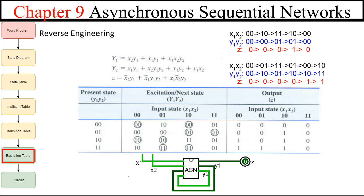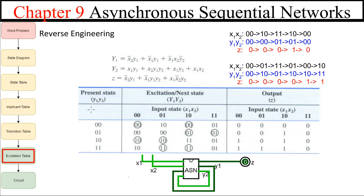And then x1 changes to a 1. In a synchronous sequential network, what we would do is draw and talk ourselves through it like this. This is our present state. Our inputs are moving us over to here. So this is going to be our next state. And when the clock hits, this next state becomes our present state.